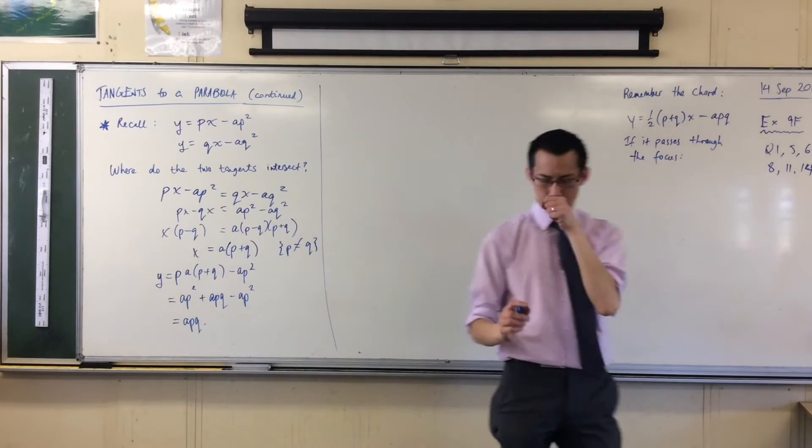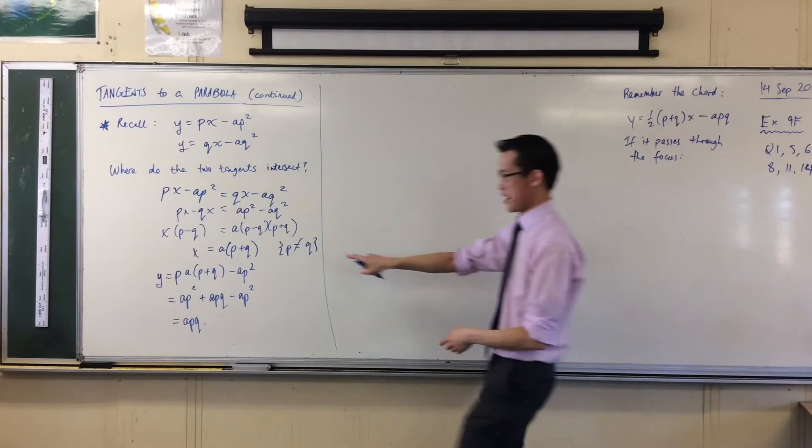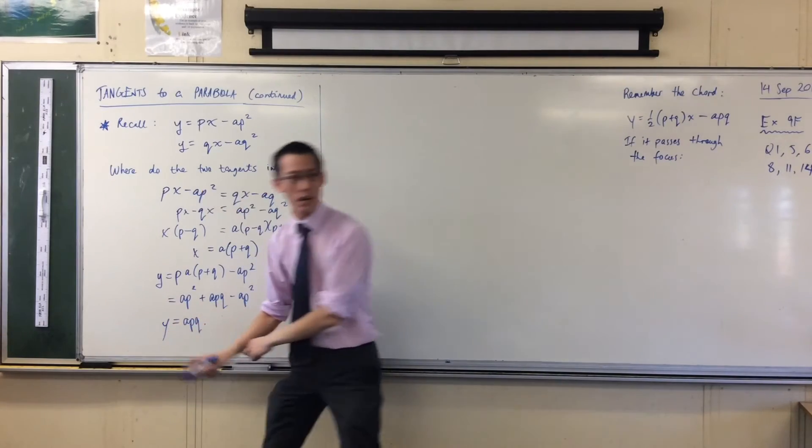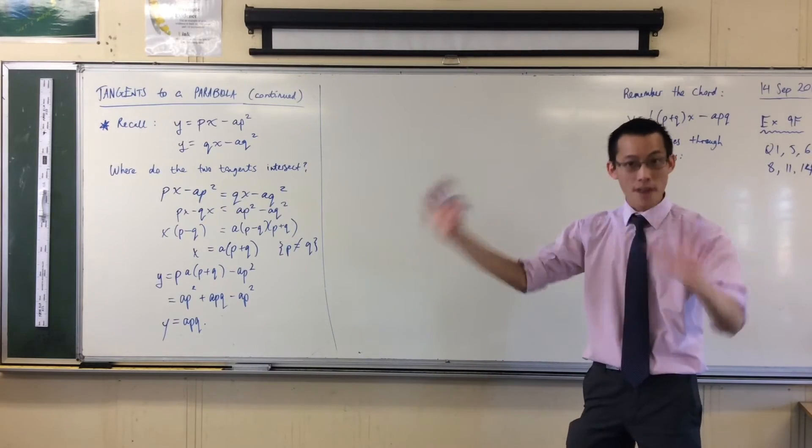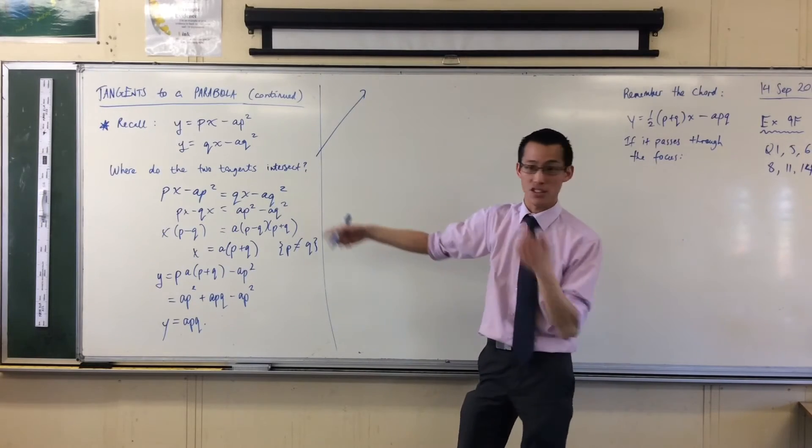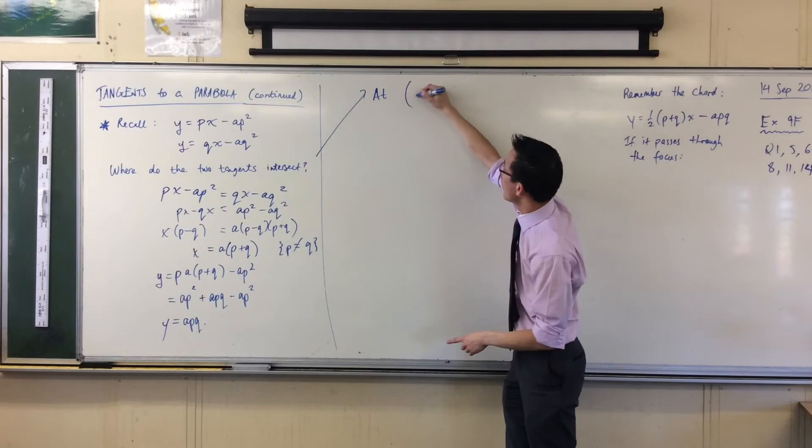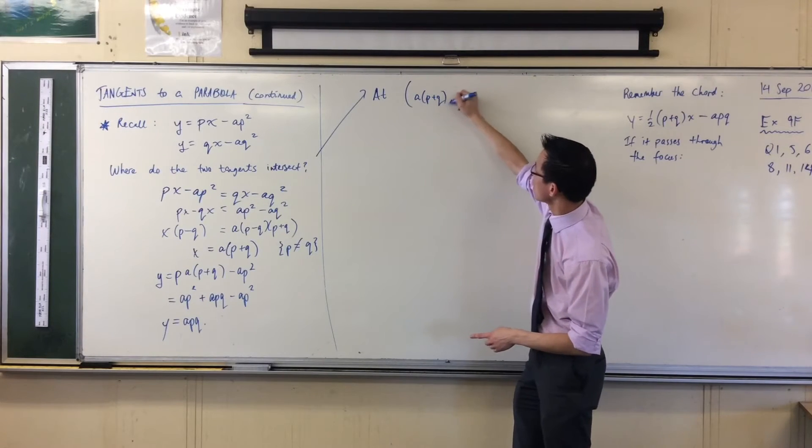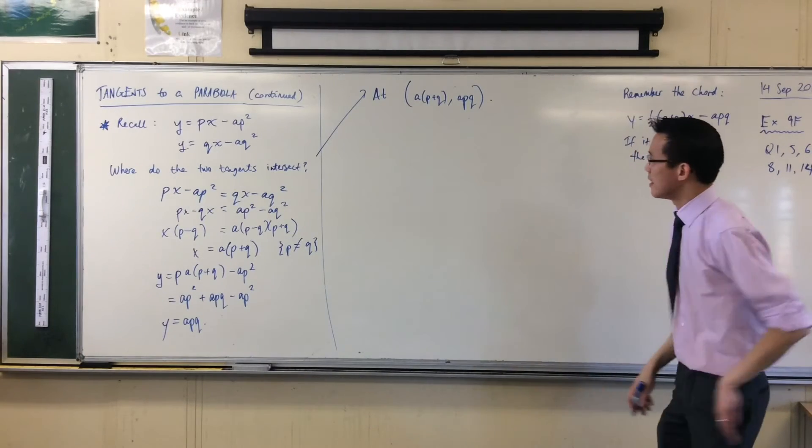Let's just pause for a second. What does this mean? I've got X here, and I've got a Y here. So now I have a point of intersection of the two tangents, wherever the tangents are. The answer to this question, where do the tangents intersect, is at, let's have a look at it, A(P plus Q), comma, APQ. That's the point of intersection.